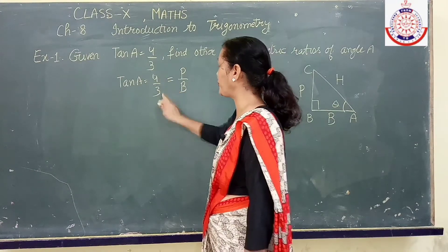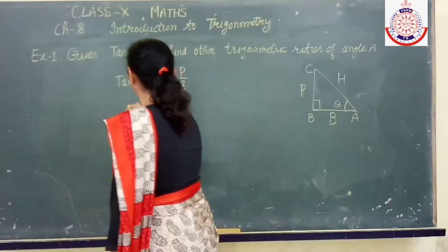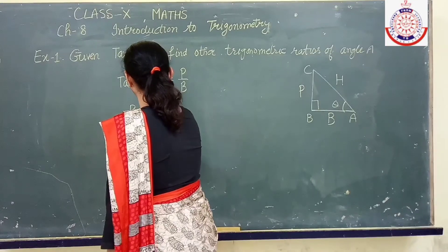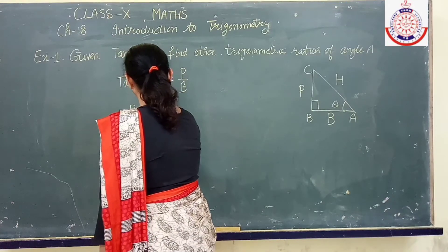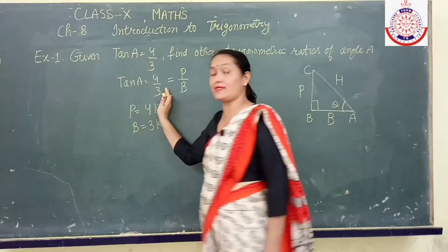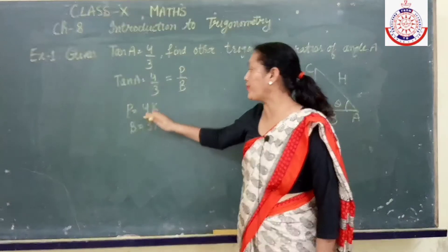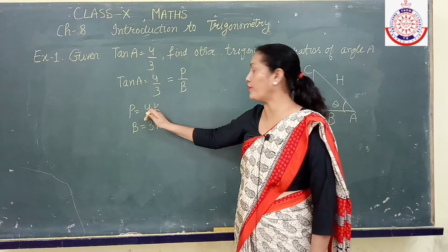But here it is ratio. So we will say perpendicular equals to 4k and base equals to 3k. These are not the values. This is the ratio. So we will be putting a constant in them - 4k and 3k.